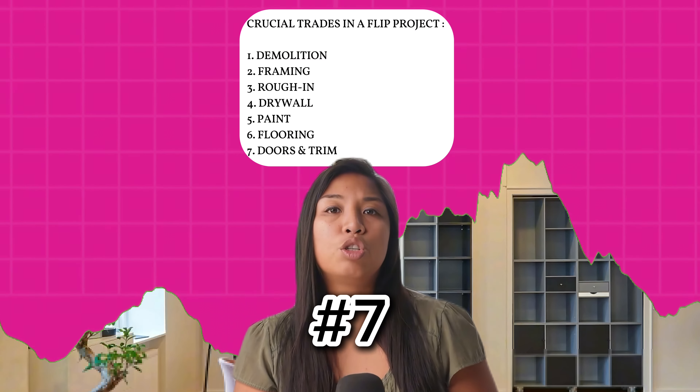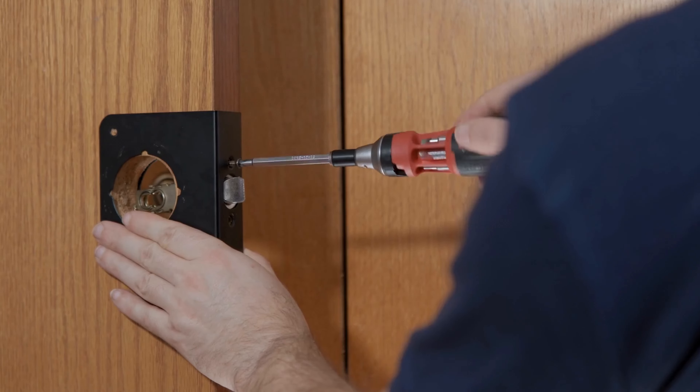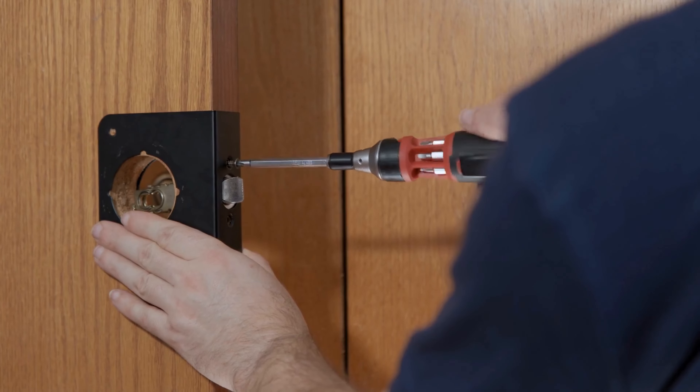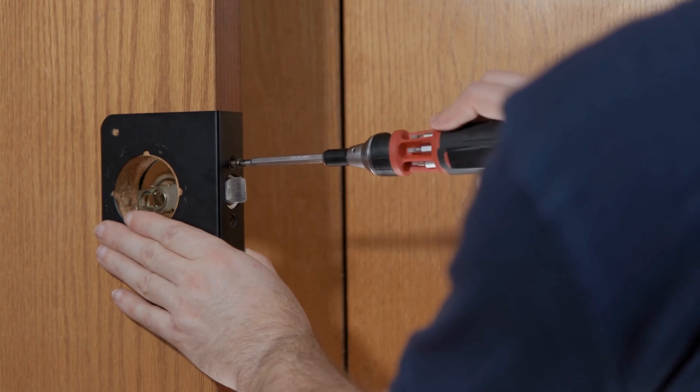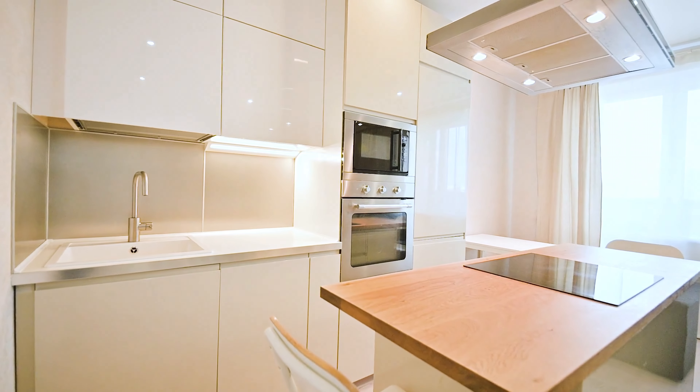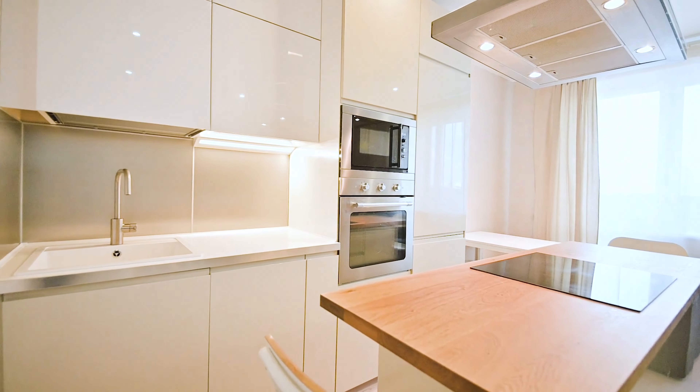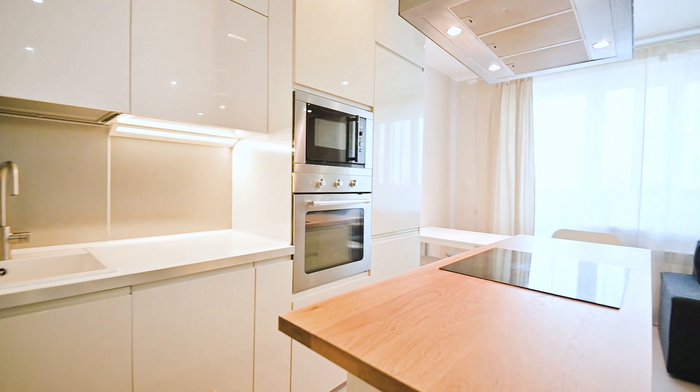Number eight is doors and trim. Remember, these are already painted, so now that you have flooring installed, you're ready to install trim and doors. This includes any crown molding, baseboard, trim around the doors and windows, and obviously installing any closet doors, interior doors, exterior doors, and all the associated hardware. Hardware includes knobs, hinges, and any hardware for the doors will be installed at this time.